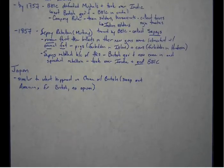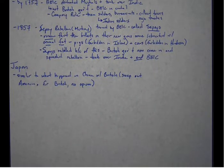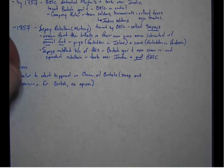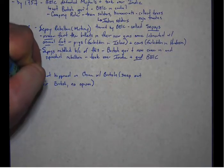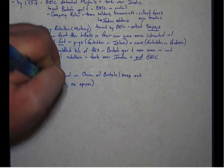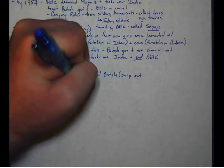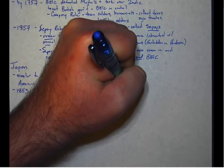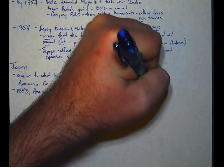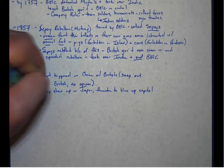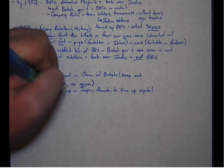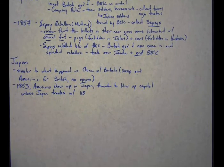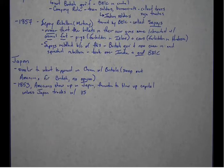So this process happens in 1853. In 1853, the Americans show up in Japan. They threaten to blow up the capital. Unless Japan starts to trade.